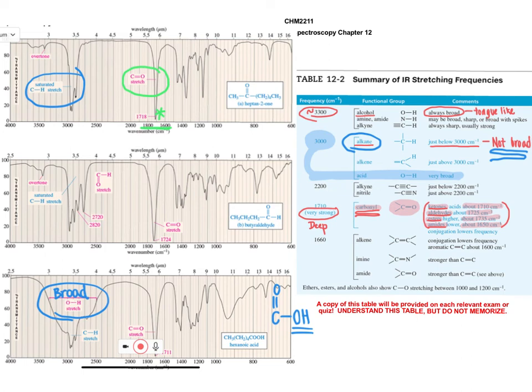So keep in mind that for carboxylic acids, the hydroxy group is going to give a broad signal. For alcohols, the hydroxy group is also going to give a very broad signal that is tongue like with possibly some extra dips here if it overlaps with the range of the alkane stretching frequencies.